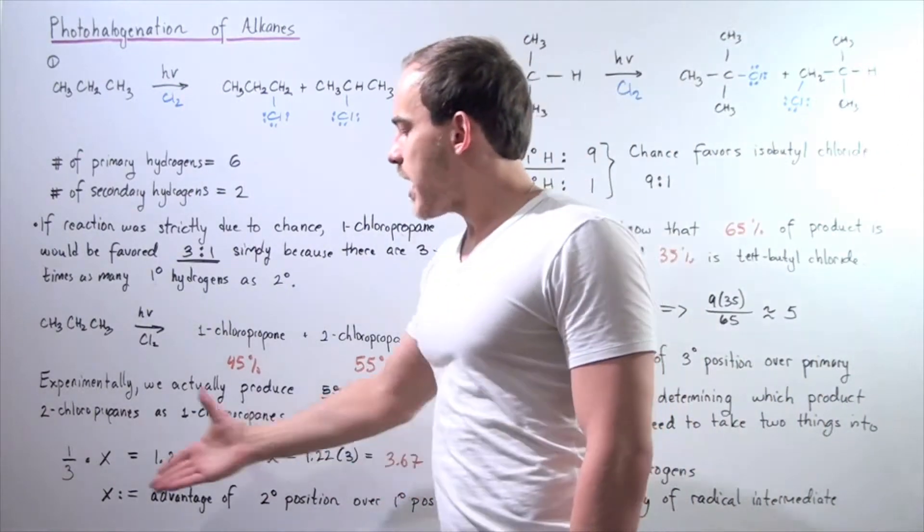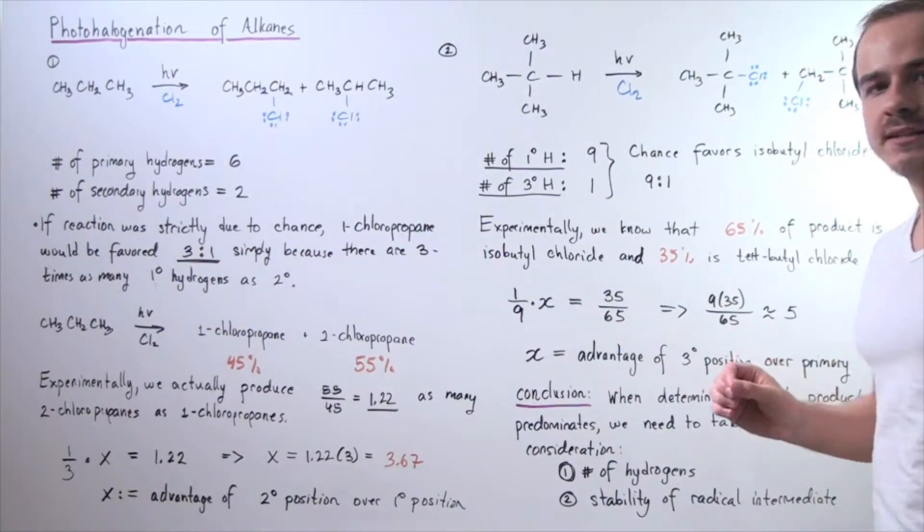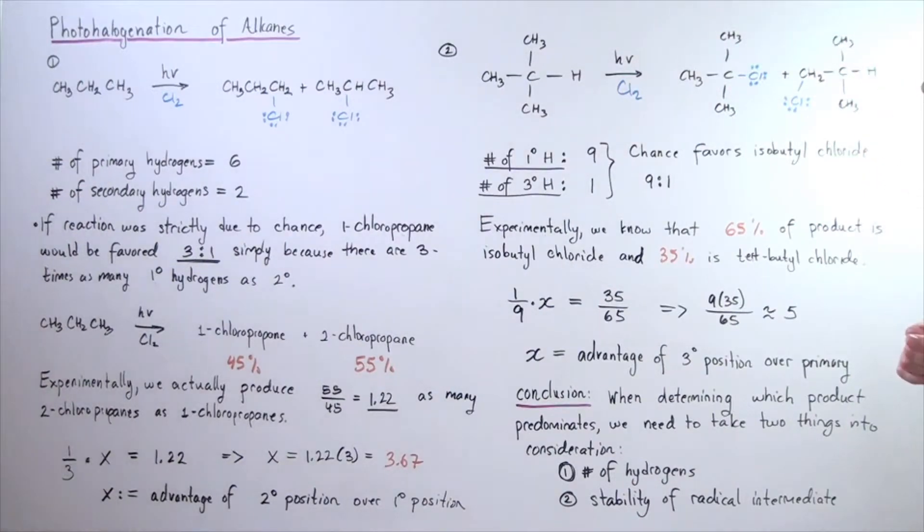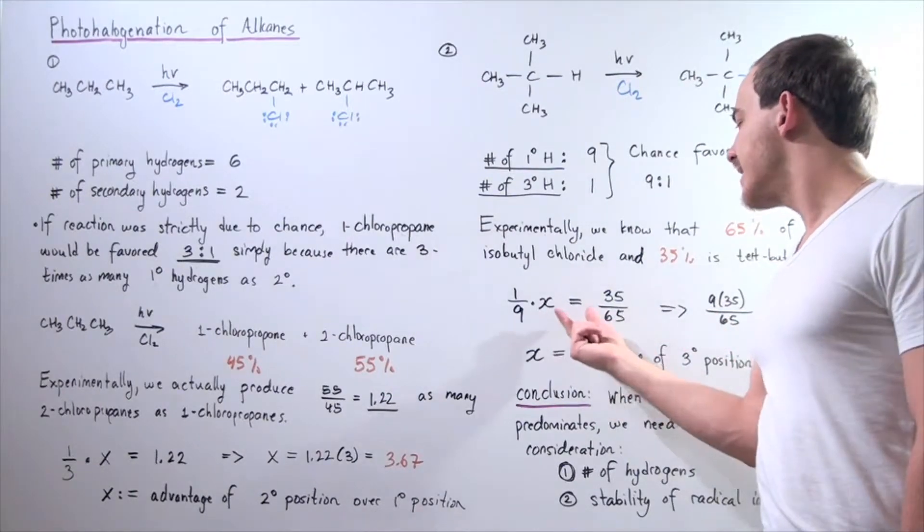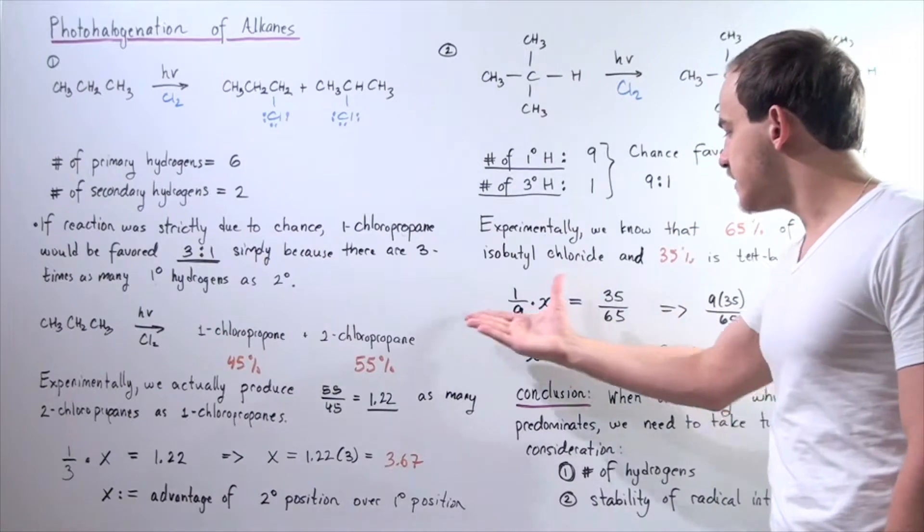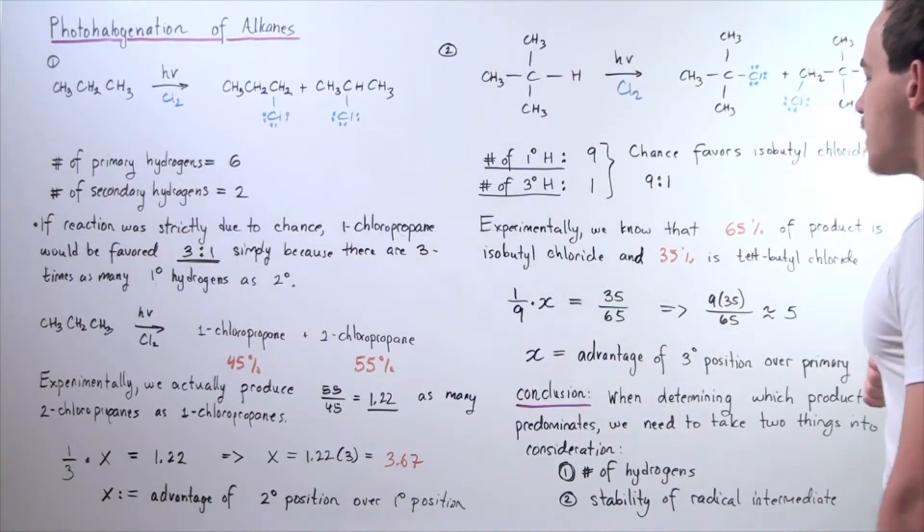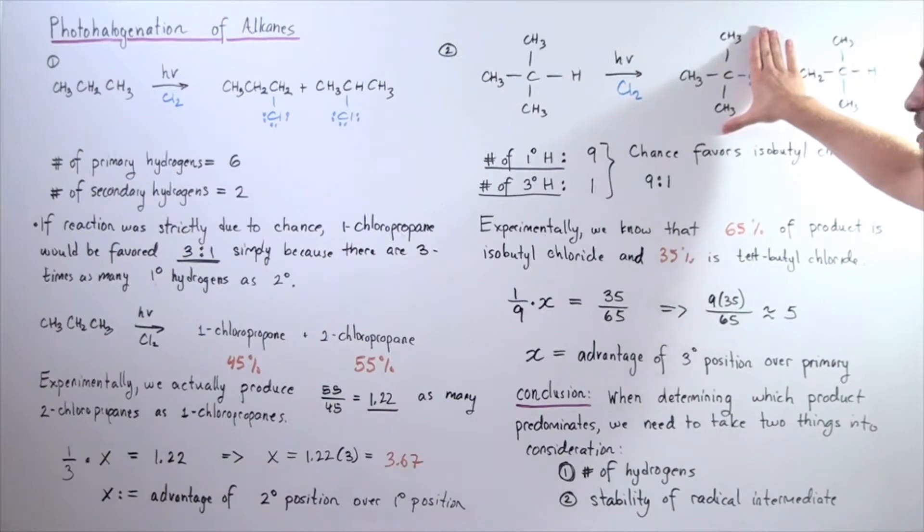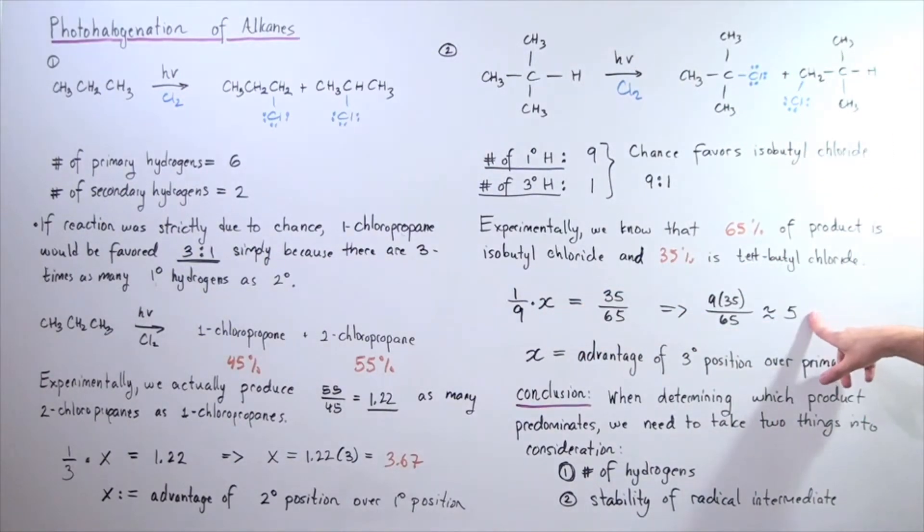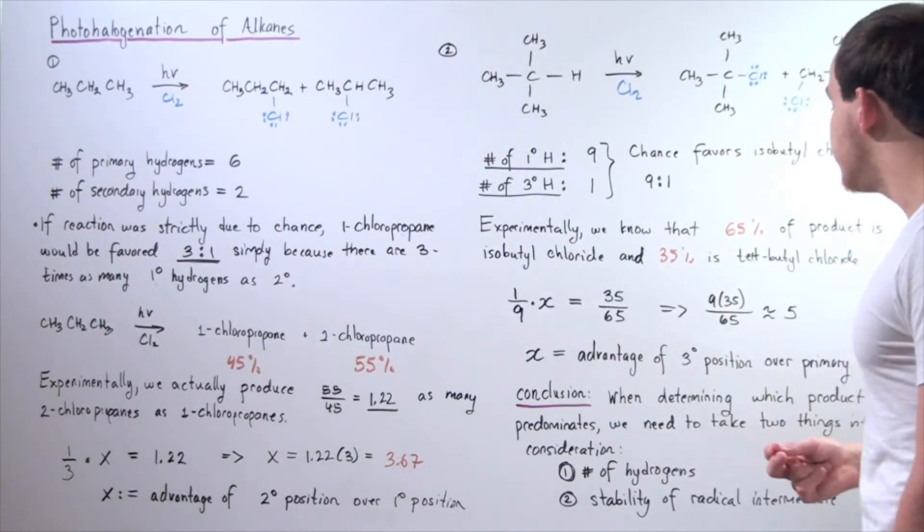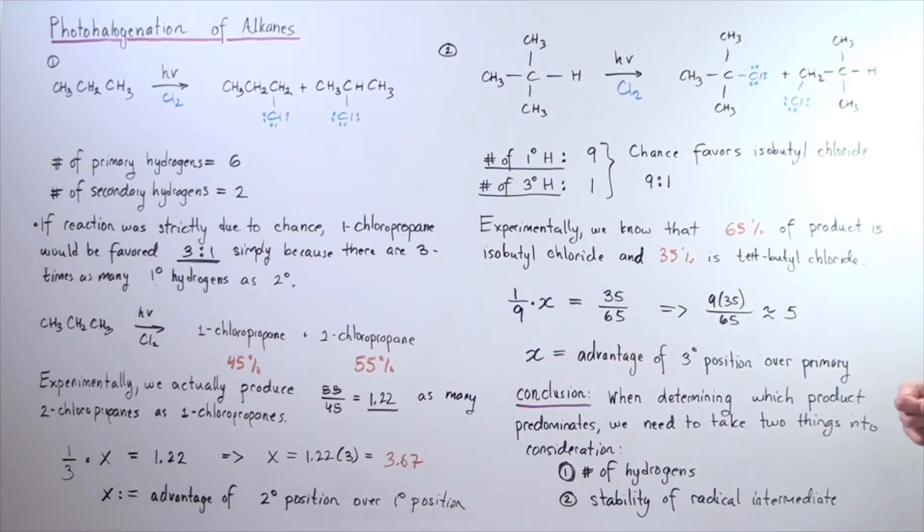So let's once again set up our formula and figure out what our x is. Notice what our advantage of our tertiary position over the primary position is. So, 1 divided by 9 multiplied by x equals 35 over 65. So, once again, what is this formula? So, x is the advantage of the tertiary position over the primary position and has to do with stability of our radical intermediate. 1 over 9 is simply our disadvantage of this molecule, this compound simply because it has less H's than on the primary position, than the primary H's. And 35 over 65 is simply how much of this product is produced. So, we solve for x and we get approximately 5. So, that means there's a 5 to 1 advantage of the tertiary carbon position and then the primary carbon position.